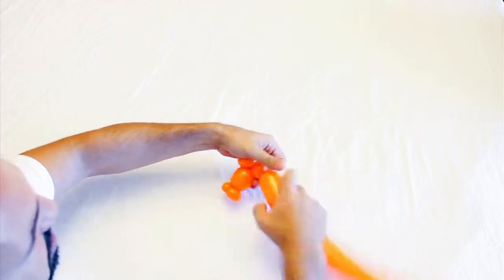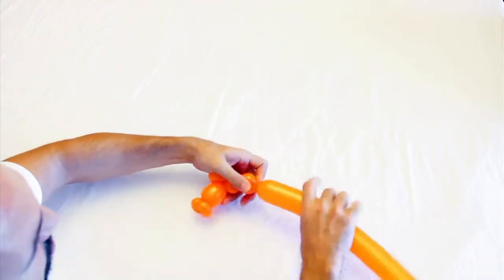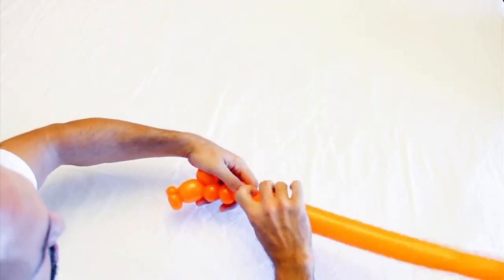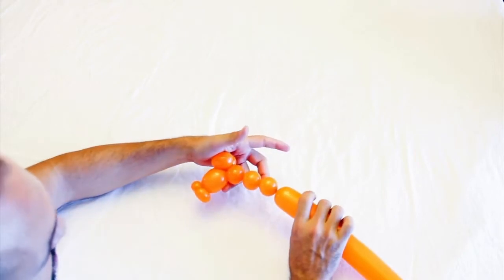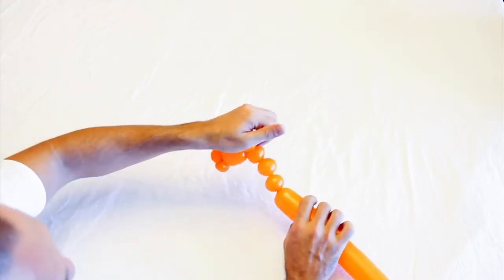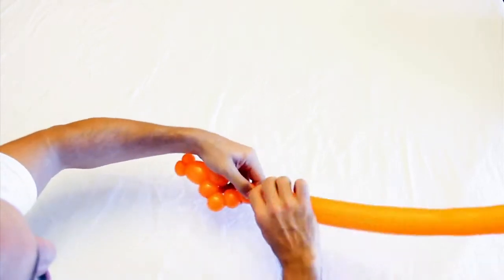You're going to follow that with a series of bubbles. You're going to make six bubbles. I usually make them about three quarters inches apiece, and you got to hold the beginning and the end, then it won't come untwisted.